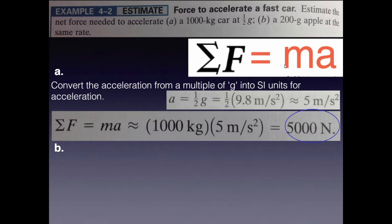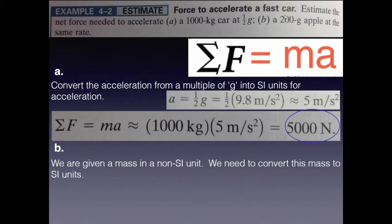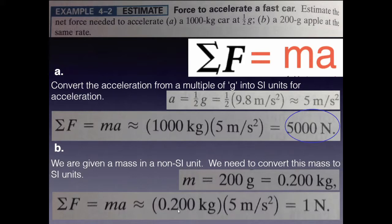Part B. We're going to apply the same acceleration to a much smaller mass, 200 grams. 200 grams. These are the wrong units for mass. We need to convert that to kilograms. Just divide by 1,000 to go from grams to kilograms. So now we're at 0.200 kilograms. Now we can multiply that by the 5 meters per second squared, same acceleration as before. And you get 1 newton.